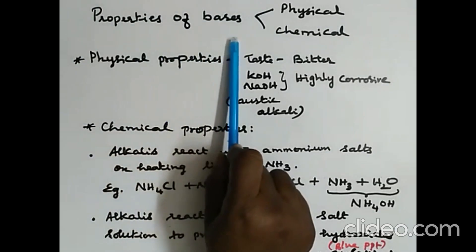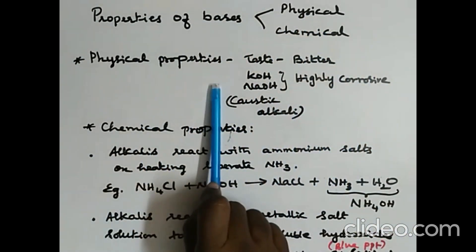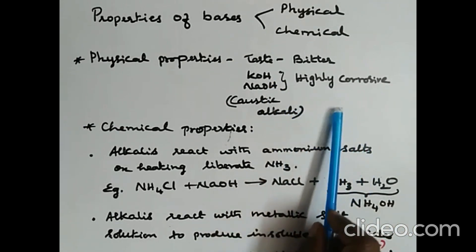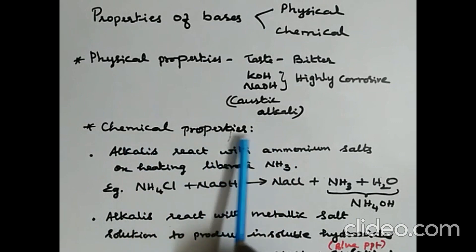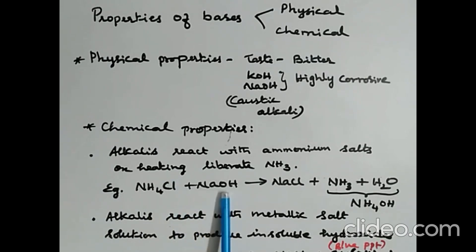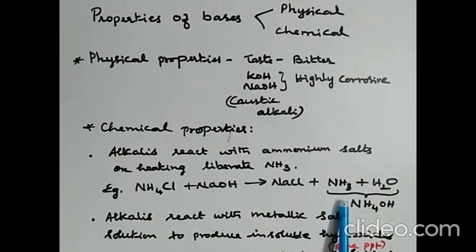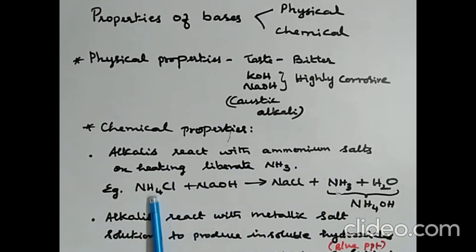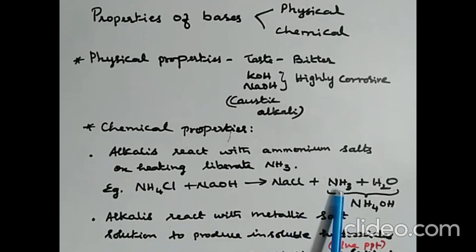The next is properties of bases — physical and chemical properties. Physical properties: bases are bitter to taste; potassium hydroxide and sodium hydroxide are highly corrosive, damaging the skin, and are called caustic alkalis. Chemical properties: alkalis react with ammonium salts on heating to liberate ammonia. Example: ammonium chloride plus sodium hydroxide gives sodium chloride, ammonia, and water. Ammonia is highly soluble in water, so it dissolves to form ammonium hydroxide.